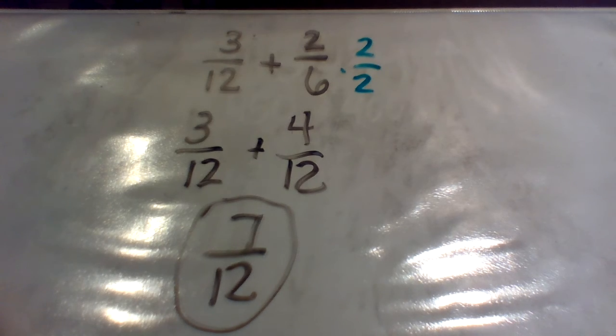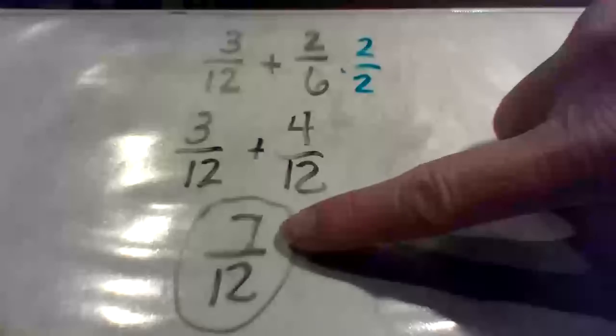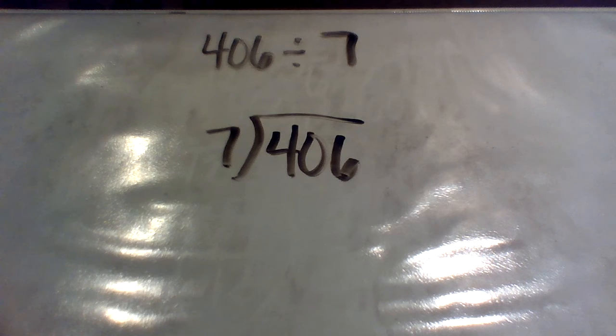And seven twelfths, we said it's pretty close to a half because six twelfths is a half. So when I did my estimate and said that I was closer to a half, my answer makes sense. On to my division.